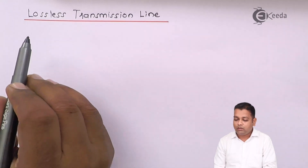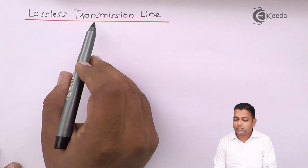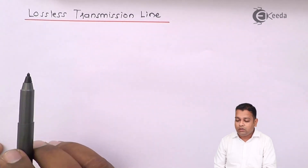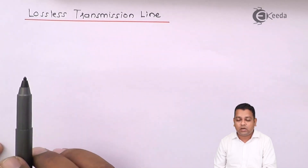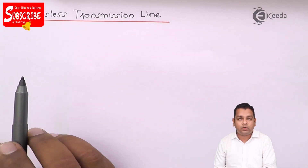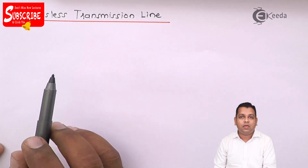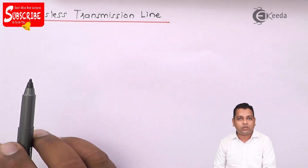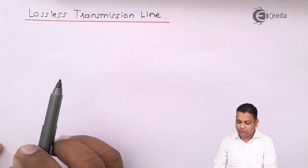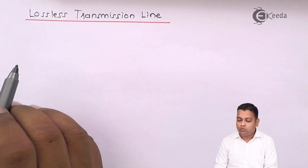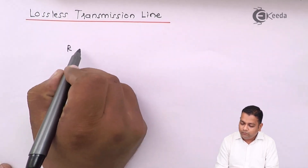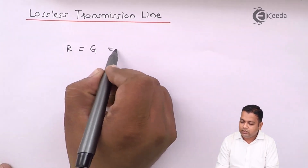The title of this topic is lossless transmission line. For the transmission line, in the previous video we derived the equations of voltage and current, along with the primary constants R, L, C, and G, and the secondary constants — characteristic impedance Z0 and the propagation constant K. For the lossless transmission line, out of the four primary constants, we have to make R and G equal to zero.